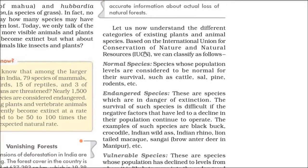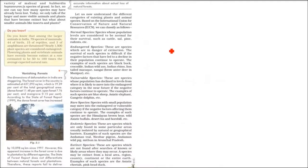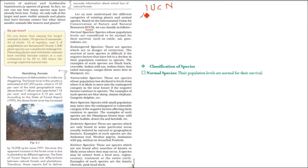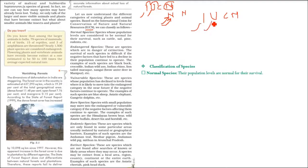To learn about different species it is necessary to categorize them. There is the IUCN — the International Union for Conservation of Nature and Natural Resources — which has classified species. The first category is Normal Species, which you find everywhere — for example cattle, rodents, sal and pine trees. The second is Endangered Species — species in danger of extinction as their population is fast dwindling, either because living conditions are not suitable or due to hunting. Examples include black buck, Indian wild ass, Indian rhino, lion, and crocodile.